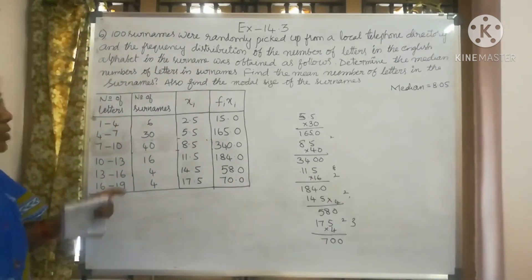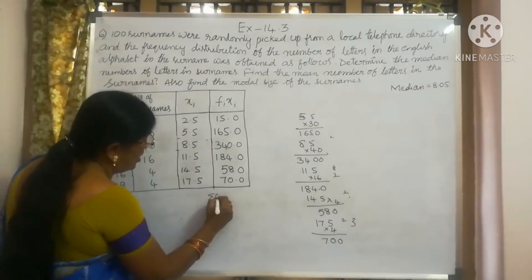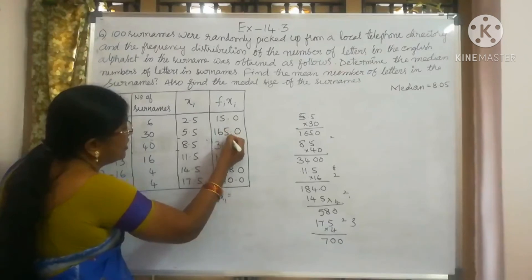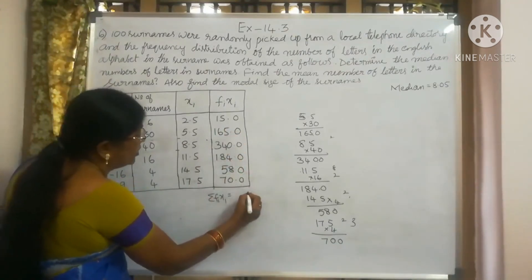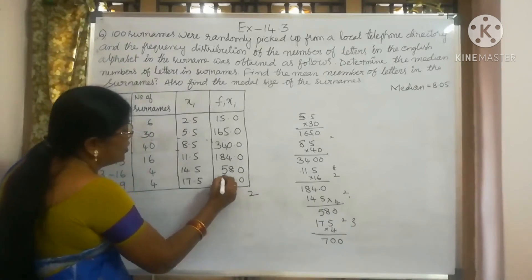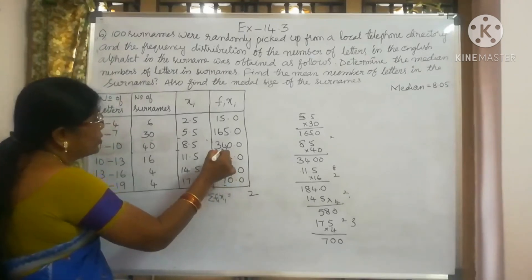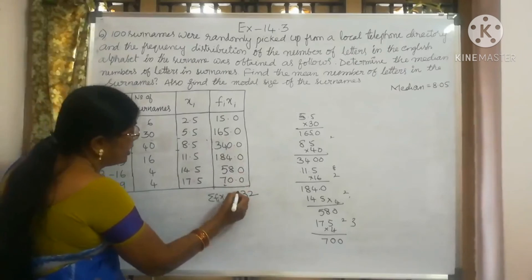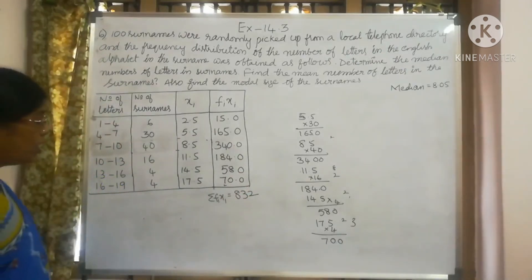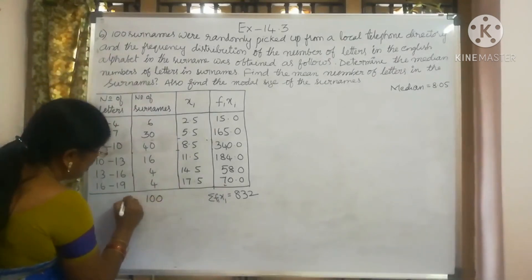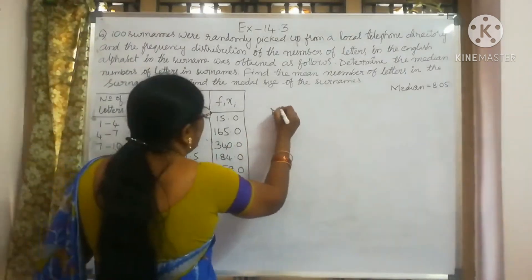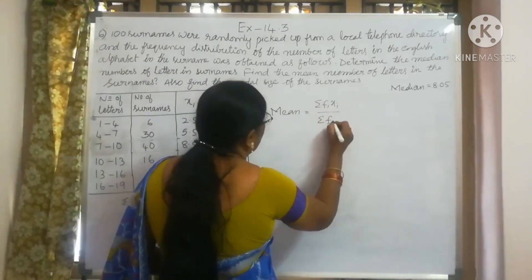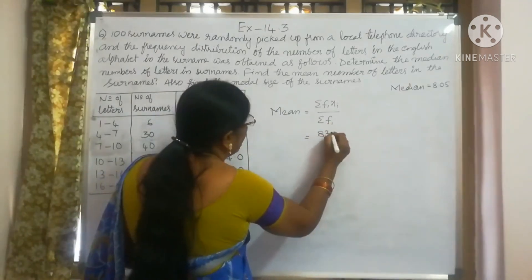Now we have to find the sum of fi times xi. So sigma fi xi — adding all the values: 30, 15, 165, 340, 184, 58, 70 — gives sigma fi xi equal to 832. And sigma fi, which we know, is 100.